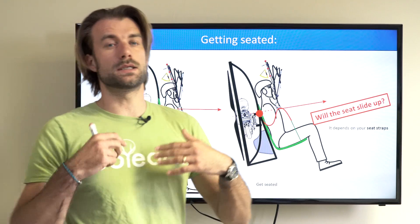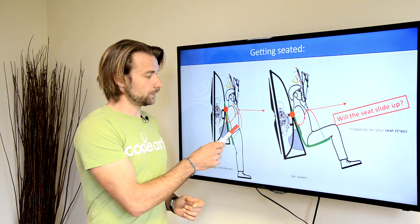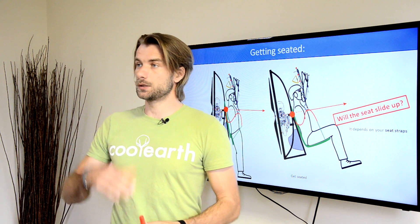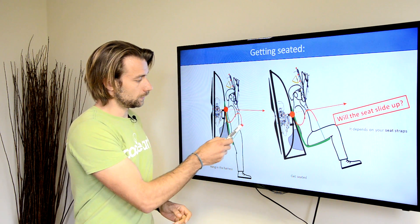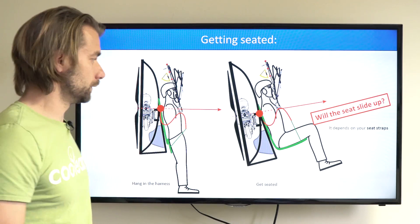So for getting seated easily, the ideal configuration is to have your leg straps really tight and positioned high, so they will not let you sag really low and to have the seat board strap rather to the lower end of the seat board.